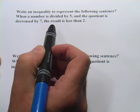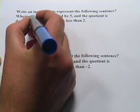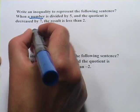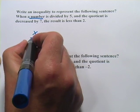It says, write an inequality to represent the following sentence. When a number is divided by 5, so again, we've got a number, that's x, is divided by 5. So I'm going to go ahead and put that over 5.